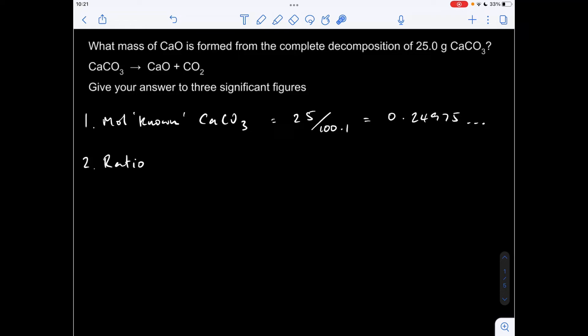Step two is we look at the ratio, the mole ratio in the balanced equation between the known and the unknown. Nice easy one, this one to start with, we've got a one to one ratio between those chemicals. So what that's telling us is that for every mole of calcium carbonate we've got, we'll make the same number of moles of calcium oxide. So we now know that that many moles of calcium oxide forms.